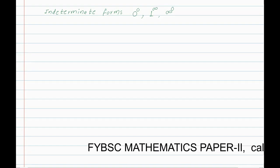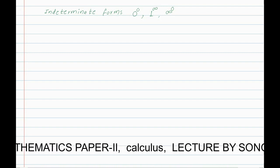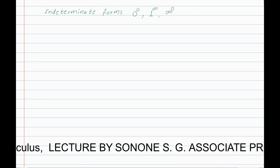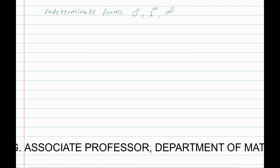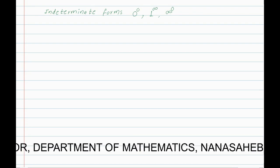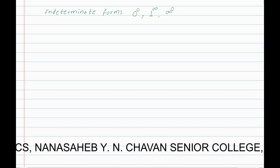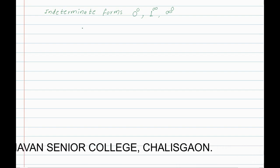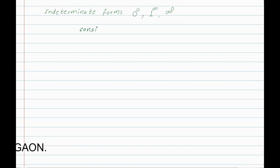Next, we will see indeterminate forms 0 to the power 0, 1 to the power infinity, and infinity to the power 0. How do we get these forms? Consider the following limit: limit x tending to a of f(x) to the power g(x).